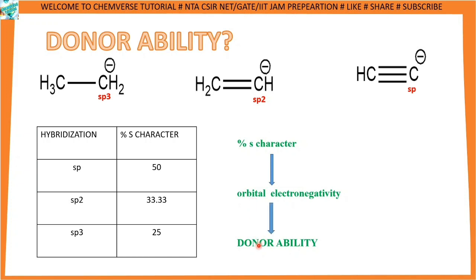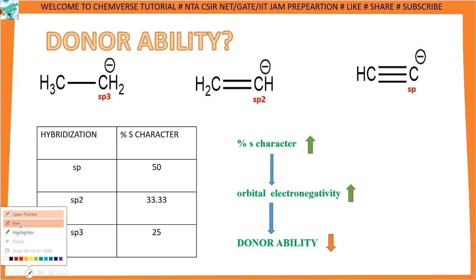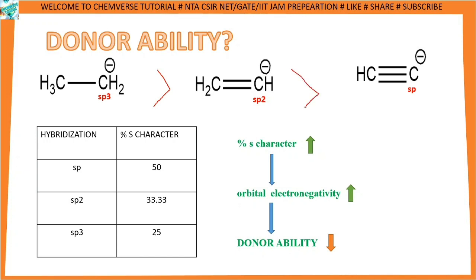The s-character percentage is directly related to orbital electronegativity and donor ability. If percent s-character increases, orbital electronegativity will increase, and as electronegativity increases, donor ability decreases. Therefore, sp3 will have the highest donor ability because it has the least s-character, and sp will have the lowest donor ability. The order is: sp3 greater than sp2 greater than sp.